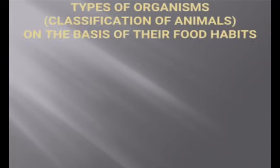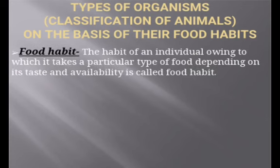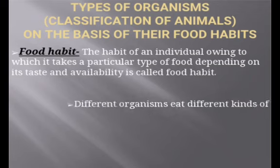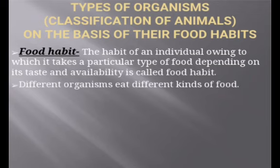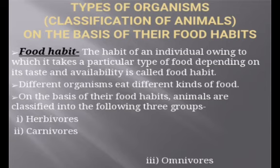Now we will study types of organisms on the basis of their food habits — the classification of animals based on their food habits. The habit of an individual by which it takes a particular type of food depending on its taste and availability is called food habit. Different organisms eat different kinds of food. On the basis of their food habits, animals are classified into three groups: herbivores, carnivores, and omnivores.